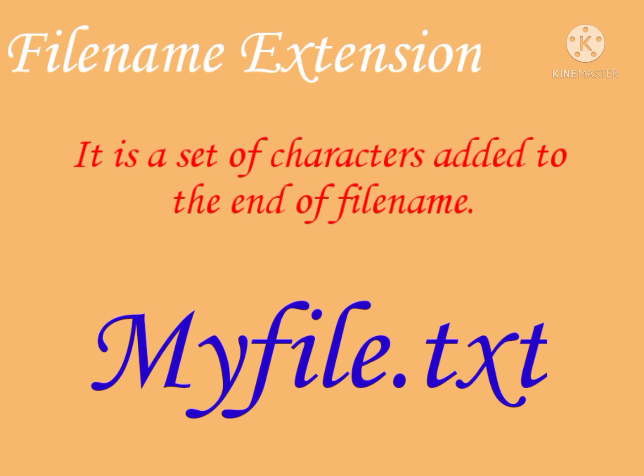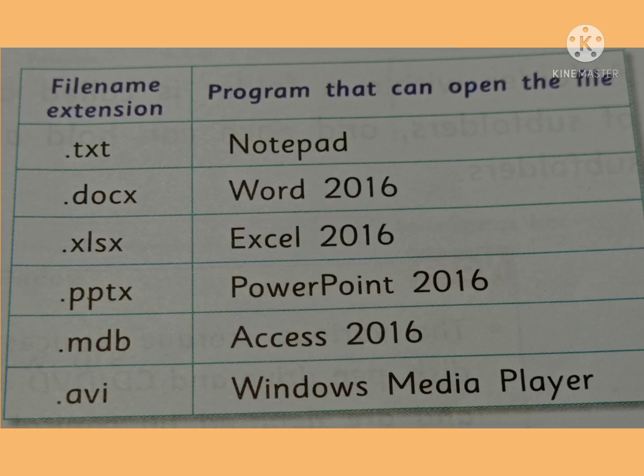We can see some file extensions and their associated programs: .txt opens in Notepad; .docx opens in Word 2016; .xlsx opens in Excel 2016; .pptx opens in PowerPoint 2016; .mdb opens in Access 2016; .avi opens in Windows Media Player. So with the extension, Windows knows what type of program to use.